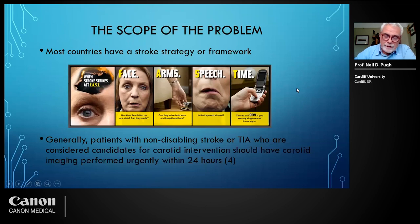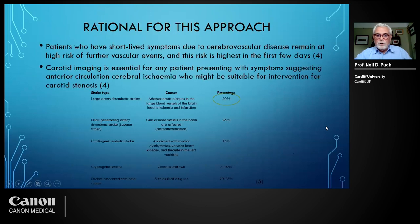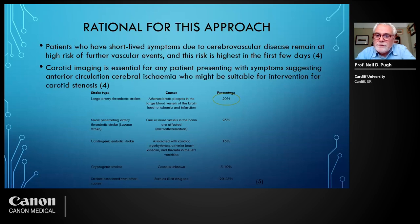One of the key points about getting the patient in for assessment quickly is establishing whether this is an ischemic or hemorrhagic stroke. Even if it is ischemic, we know that patients who have had a non-disabling stroke or TIA who would be candidates for carotid intervention should have their imaging performed in a timely fashion. In the UK, the Royal College of Physicians recommends this is done within 24 hours. Evidence shows patients with short-lived symptoms remain at high risk of further vascular events, and the risk is highest in the first few days.